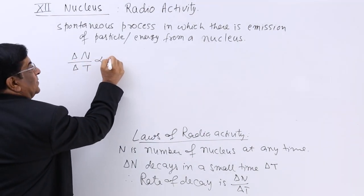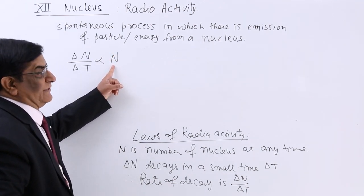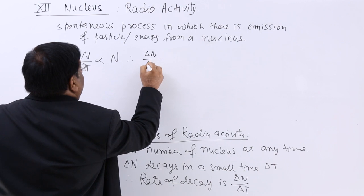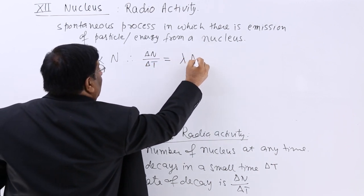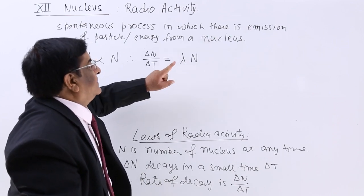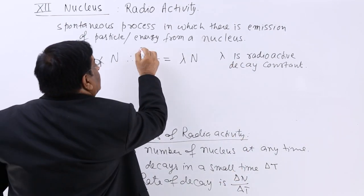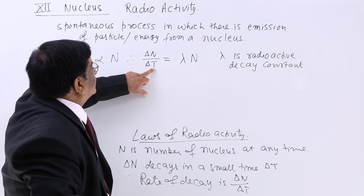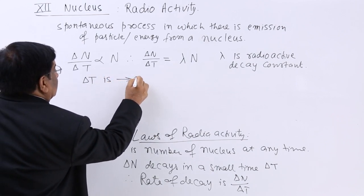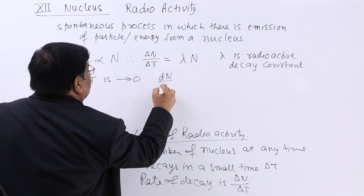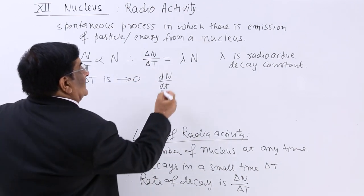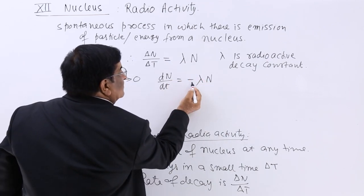The rate of decay is proportional to the total number of nuclei at that moment. Making it an equality: delta N / delta T equals a constant times N. We call this constant the radioactive decay constant. Now if delta T approaches zero, we can write it as dN/dt, and the rate of decay equals minus lambda times N.